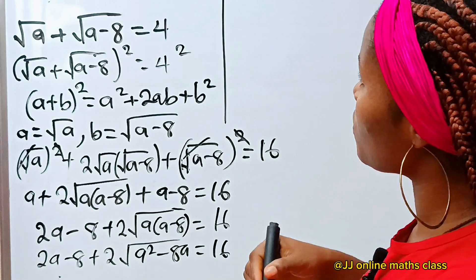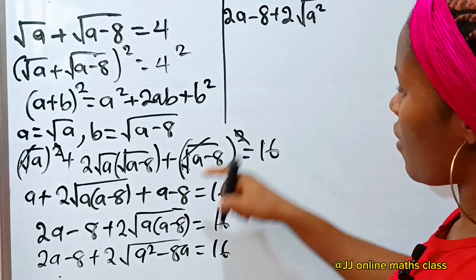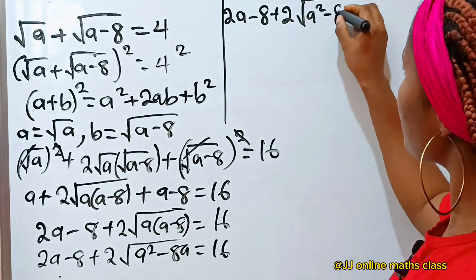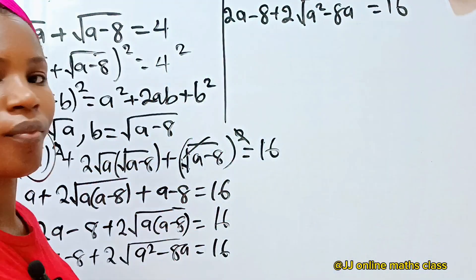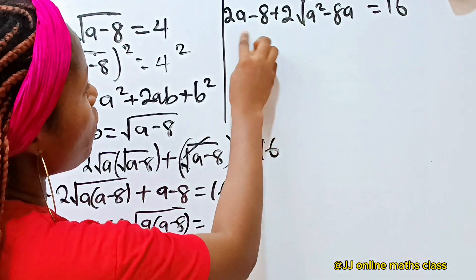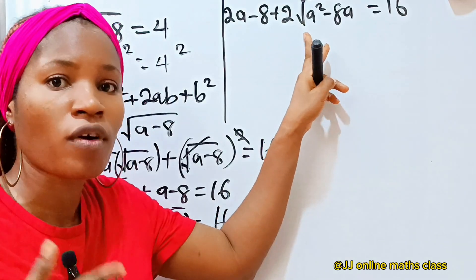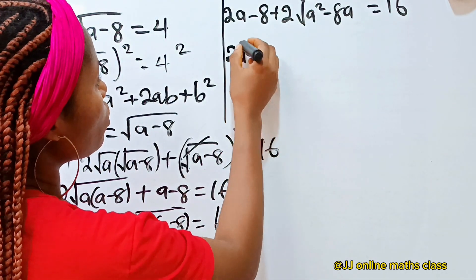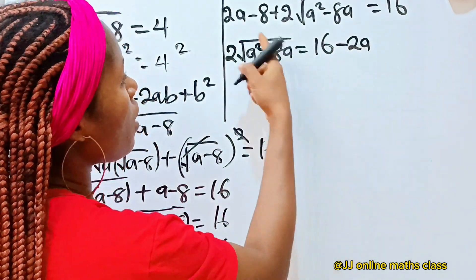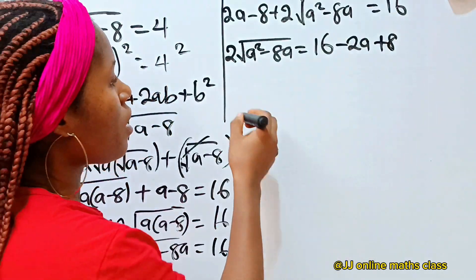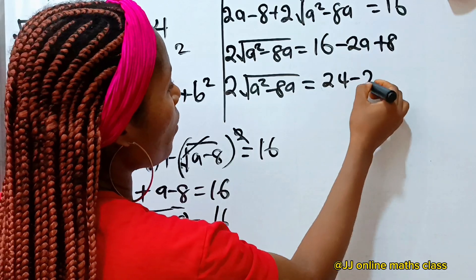Now, to recap, we have 2a minus 8 plus 2 root of a squared minus 8a equals 16. We need to isolate the square root term on one side so we can square both sides to remove it. So we transfer the other terms: 2 root of a squared minus 8a equals 16, then plus 2a crosses to become minus 2a, and minus 8 crosses to become plus 8. So we have 2 root of a squared minus 8a is equal to 24 minus 2a.